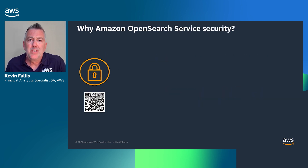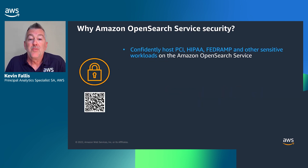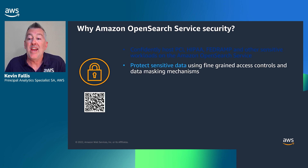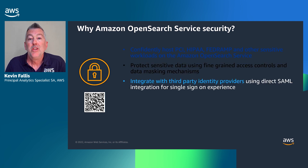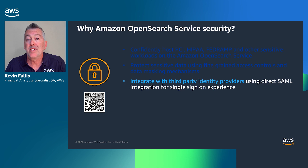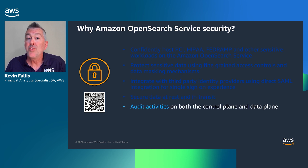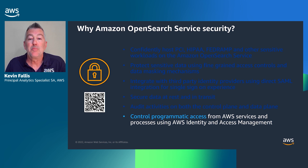So why Amazon OpenSearch service security? First of all, you can confidently host PCI DSS, HIPAA, FedRAMP, and other sensitive workloads on the Amazon OpenSearch service. You can protect sensitive data using fine-grained access control and data masking mechanisms. You can integrate with third-party identity providers for direct SAML integration for a single sign-on experience. You can secure your data at rest and in transit. You can audit activities on both the control plane and the data plane. And finally, you can control programmatic access from AWS services and processes using AWS Identity and Access Management.